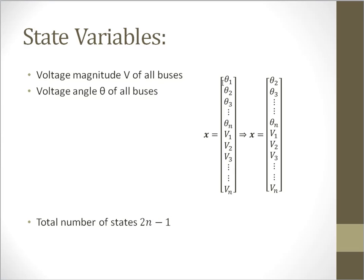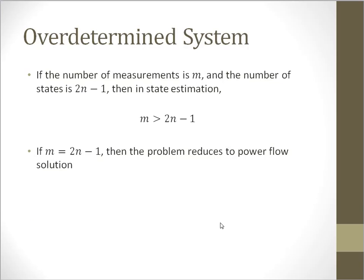We take theta 1 as 0 and remove that from the vector. So if there are n buses in the system, then the total number of states becomes 2n minus 1.